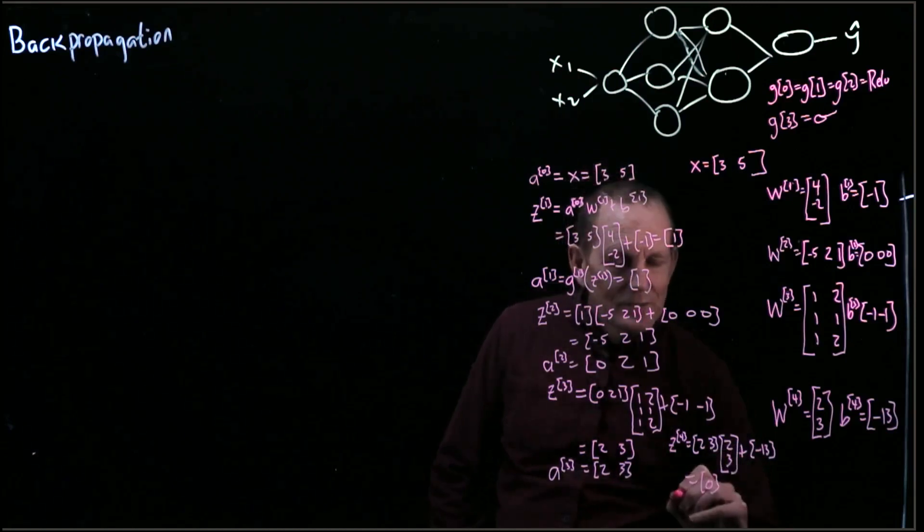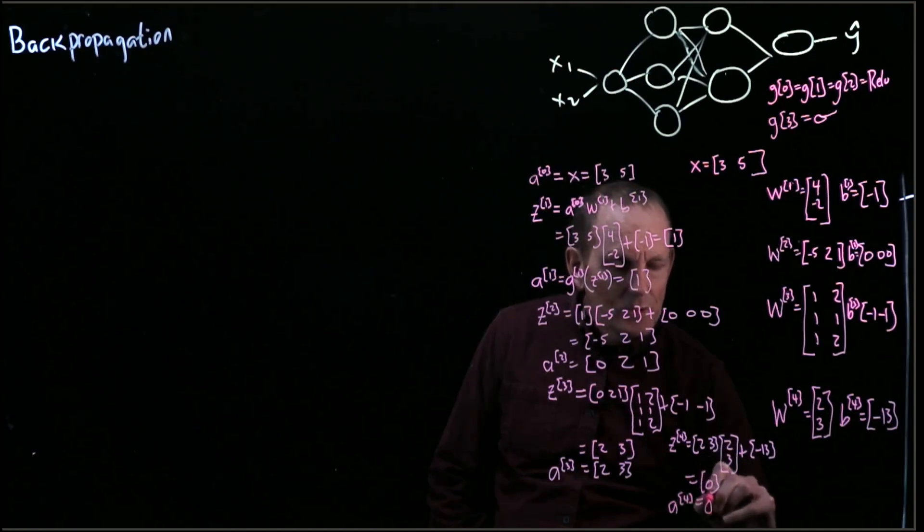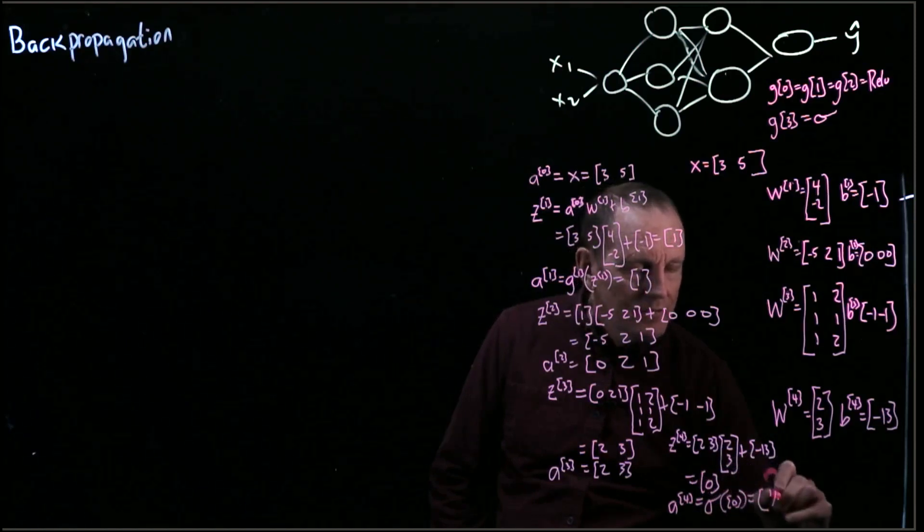That's handy, because we know that A at 4 equals sigmoid of 0, and we can calculate that by hand as just equals 1 half.